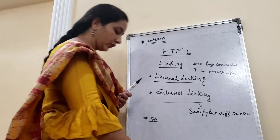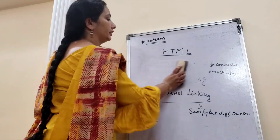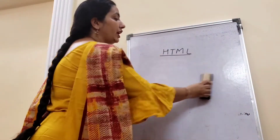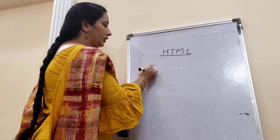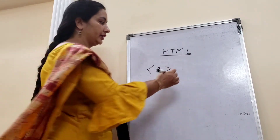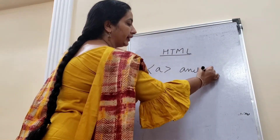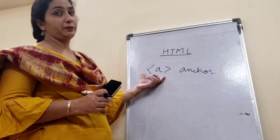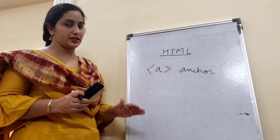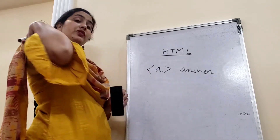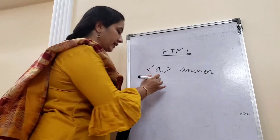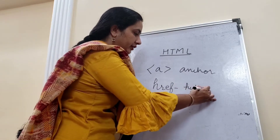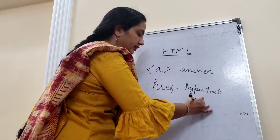Now, come to its tag. Which tag are we using for linking? The tag which we are using for linking is called the A tag. A stands for anchor. The A tag is what helps you to connect your pages, whether it is external or whether it is internal. The attribute which we are using for linking is called HREF — hypertext reference.